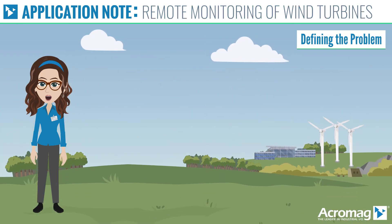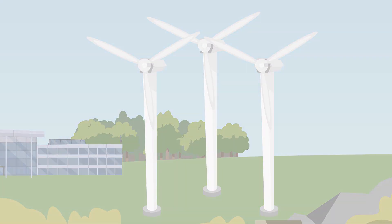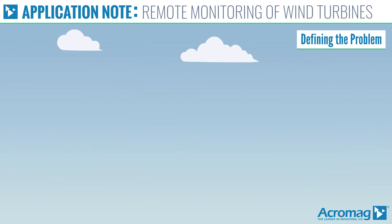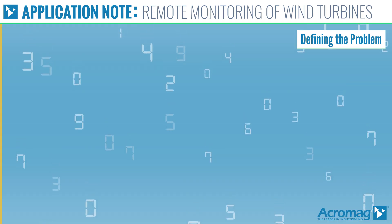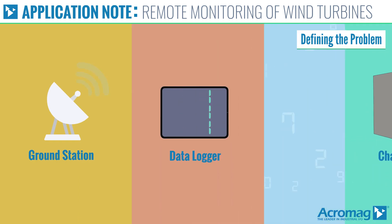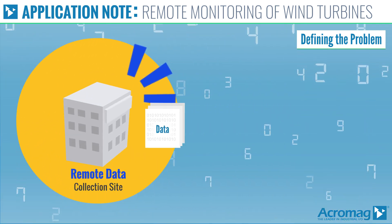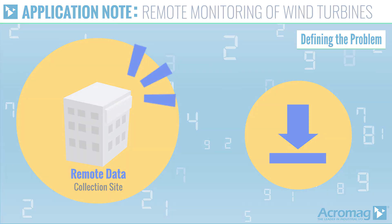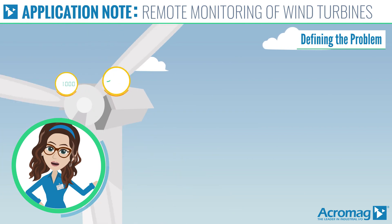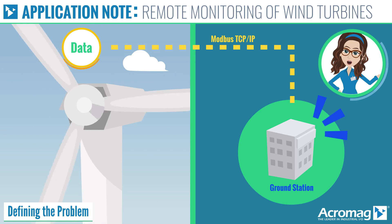A large utility company has a requirement to monitor multiple data points on a wind turbine. The turbine head is 300 feet above the ground. The data must be sent to a ground station, saved to a data logger, and displayed on a Honeywell chart recorder. Several data collection points, both discrete and analog, must be acquired and sent to the ground station using Modbus TCP/IP protocol.